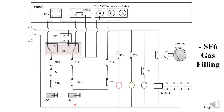Moving on to the tripping circuit: again we have the GLX contact, then auxiliary contacts 52A and 52B, and there is a trip coil. The use of 52A and 52B is — whenever the breaker is in open condition, 52B will remain closed, through which we can get a closed indication. Also, the auxiliary contacts 52A and 52B are used for the indication circuit to indicate whether the circuit breaker is on or off.